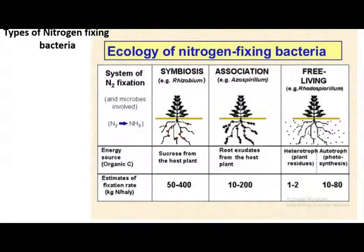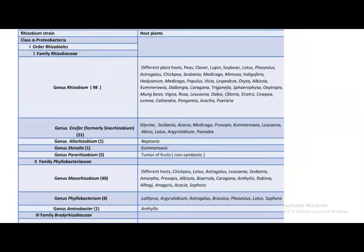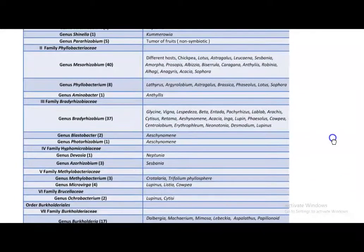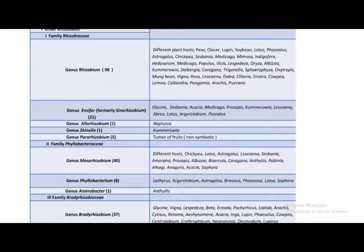Rhizobium can fix around 50 to 500 kilograms of nitrogen per hectare per year. The term Rhizobium is also used as a common or general term referring to any bacteria that nodulates a legume plant. Various genera of bacteria are referred to as Rhizobium, as they all can produce nodules on legume plants. In total, around 18 to 20 genera have the potential to nodulate legumes.